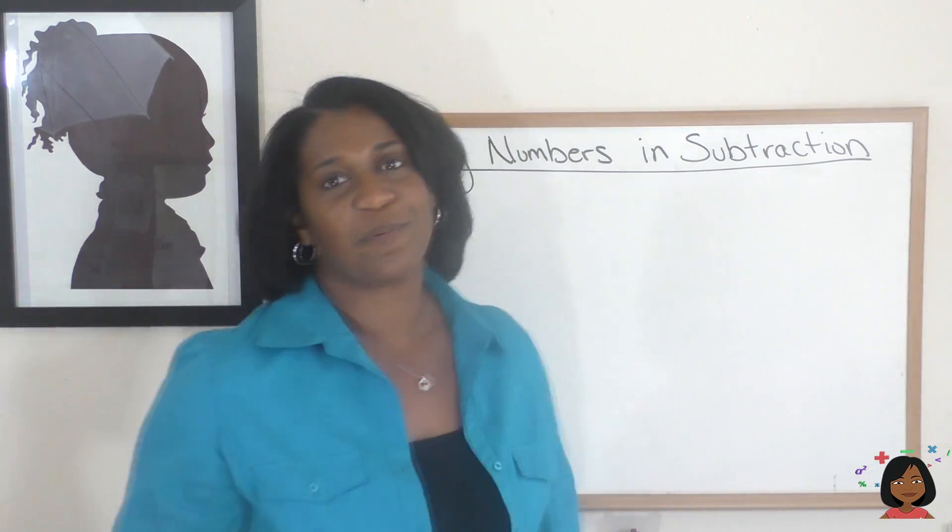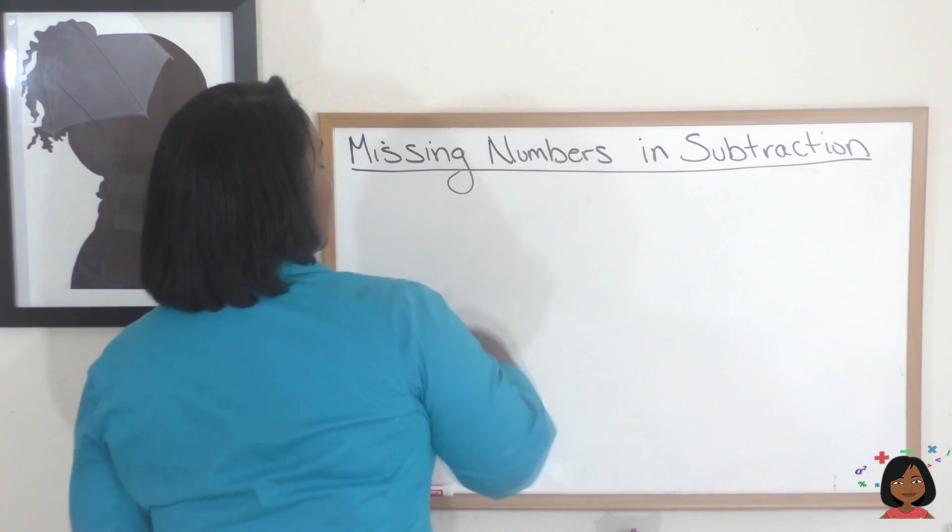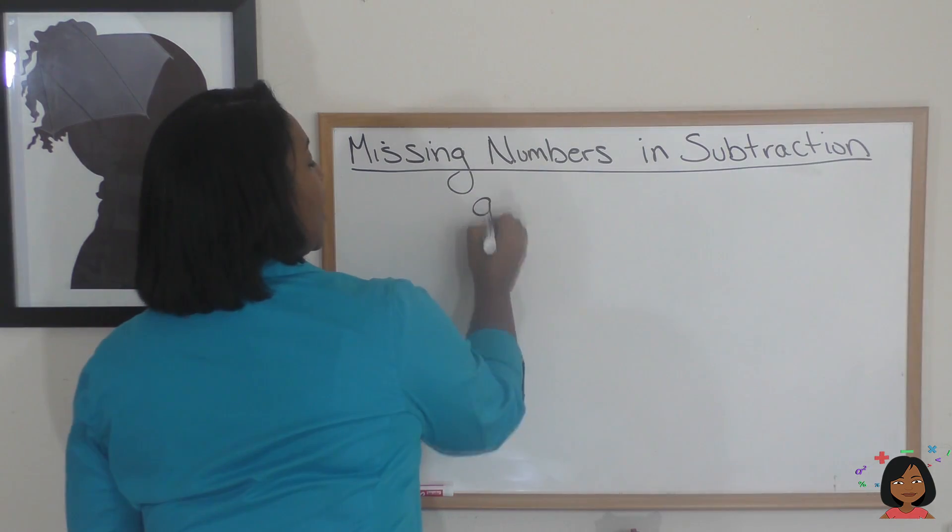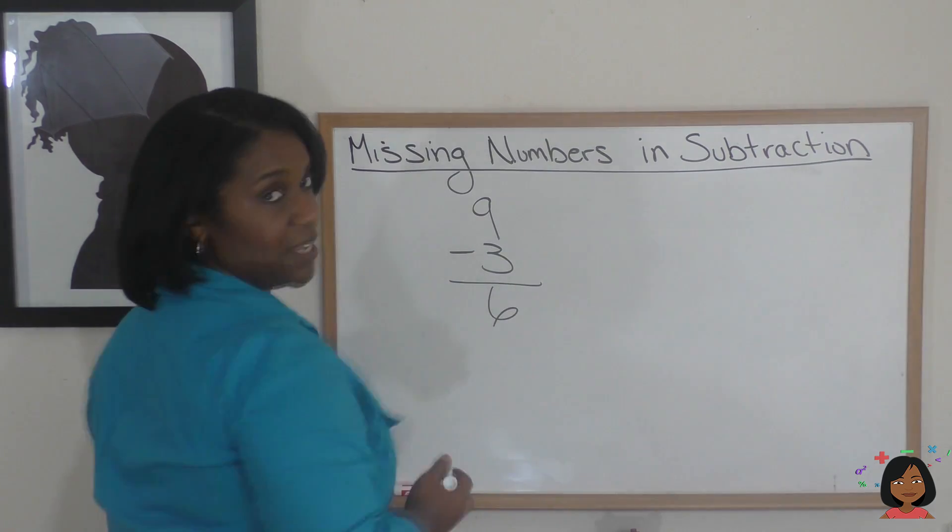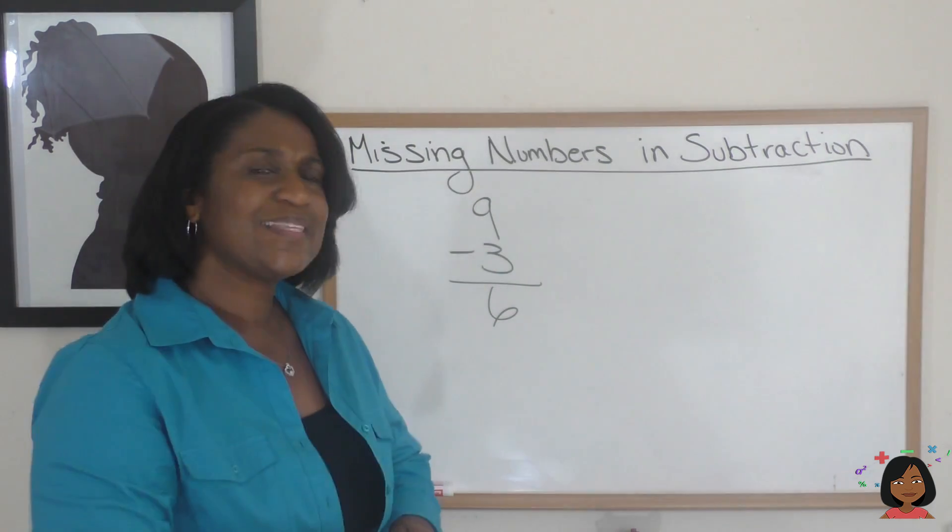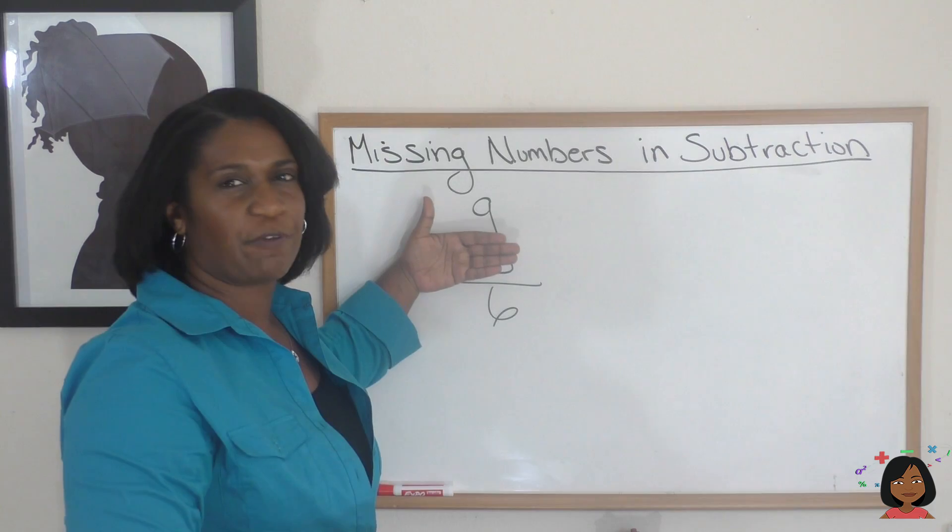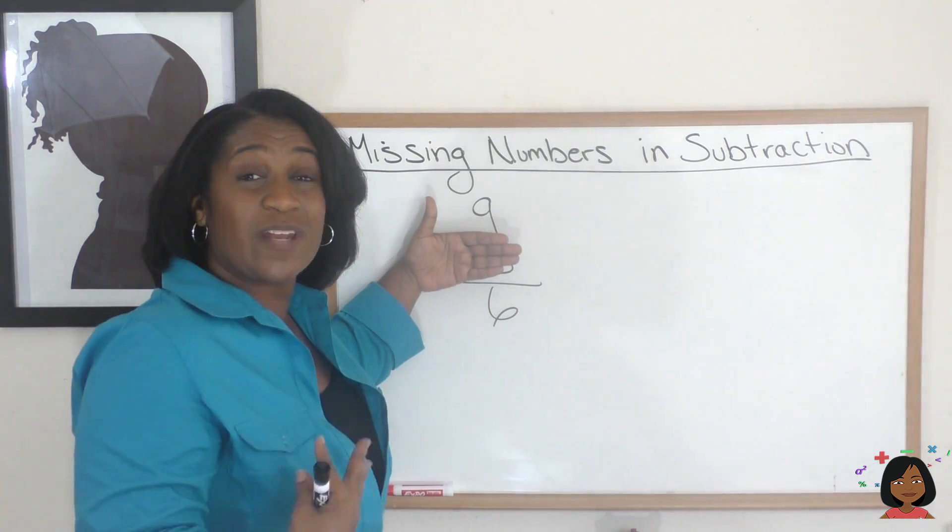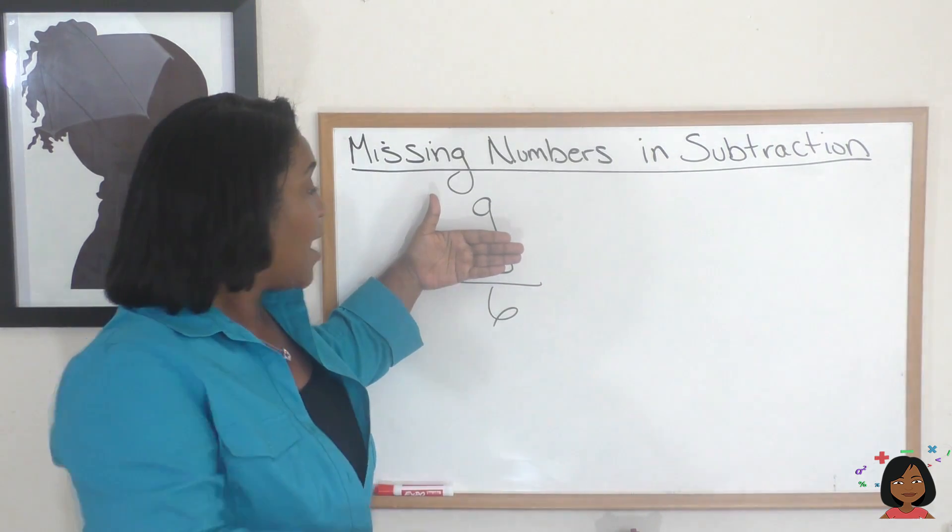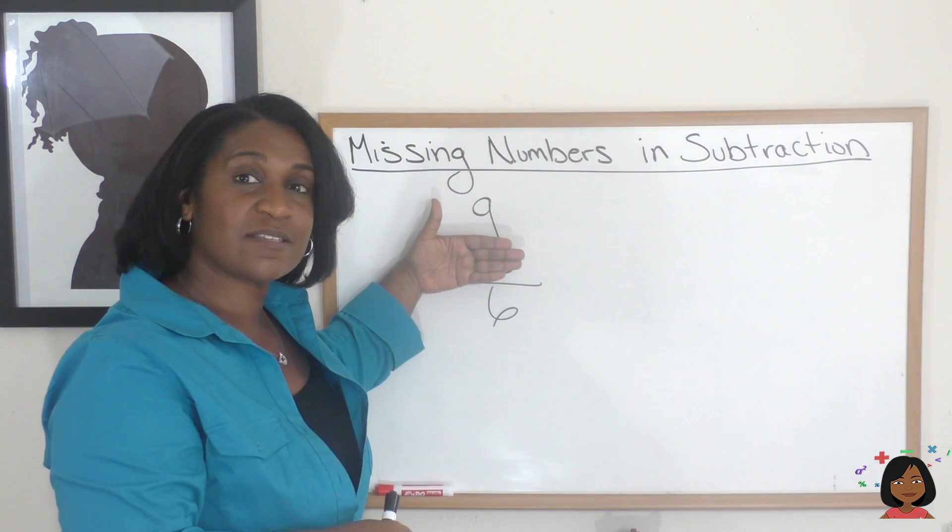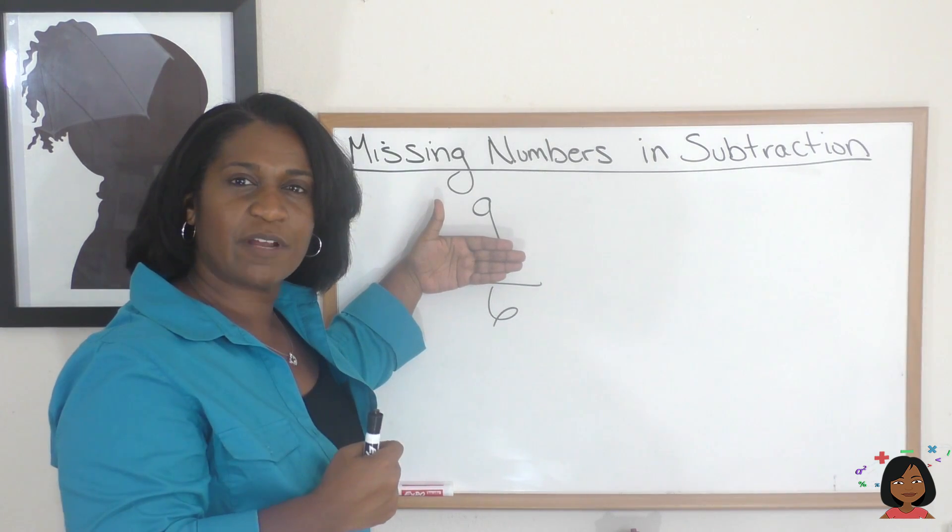Let's give a really easy example to start things off. Let's say we had the number 9 minus 3, and it gives us 6. But let's say I covered up the 3, and that was my missing number, and I wanted to find out the 3, and I have the numbers 9 and 6. Is there a way I'd be able to figure out this 3?